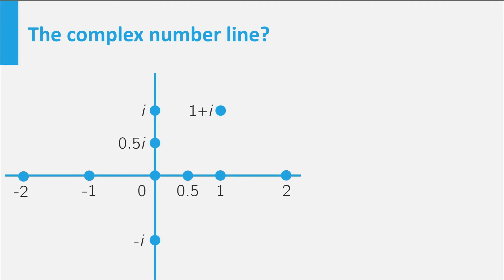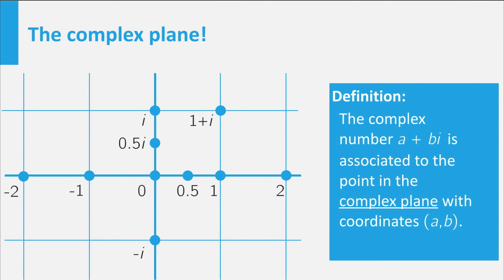We can now formally introduce the complex analogue of the number line. The complex plane is a plane on which we visualize all complex numbers. The number a plus b times i is located at coordinates (a, b), thus 2 minus i is located at coordinates (2, -1), and minus 2 plus i at coordinates (-2, 1).